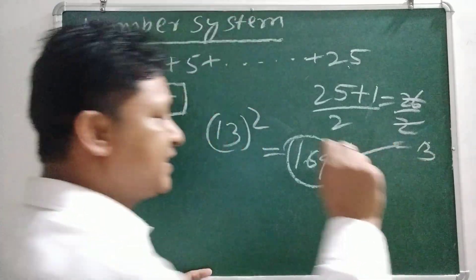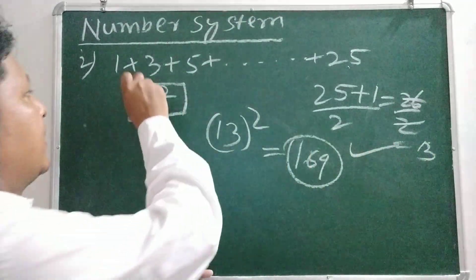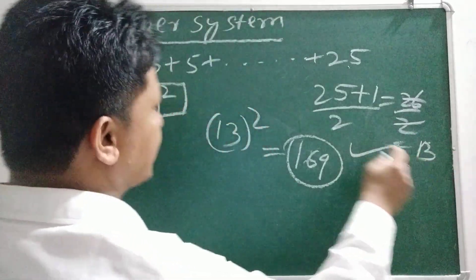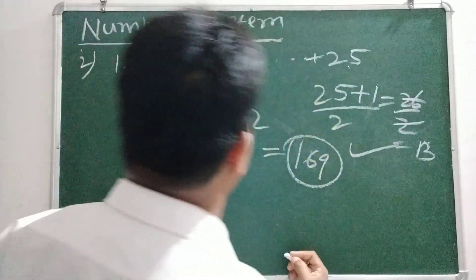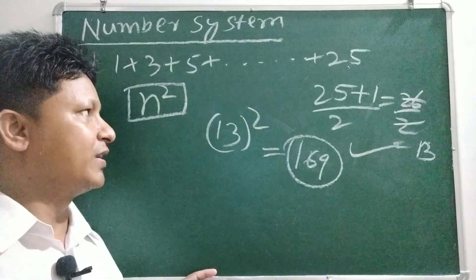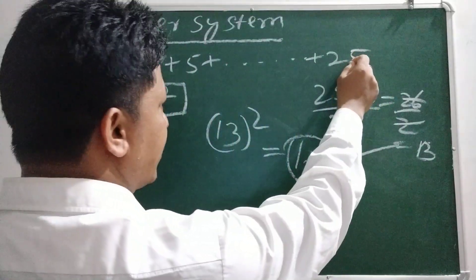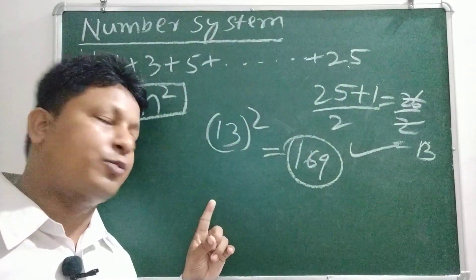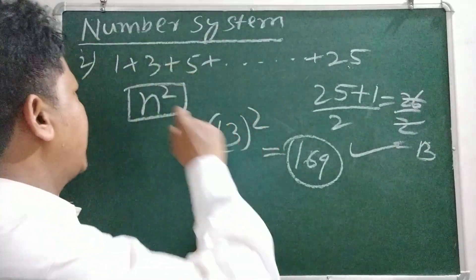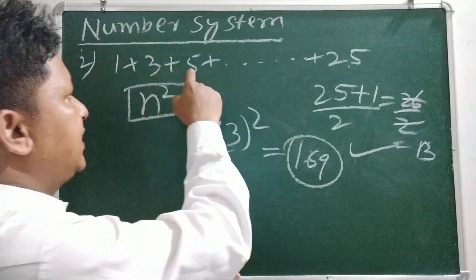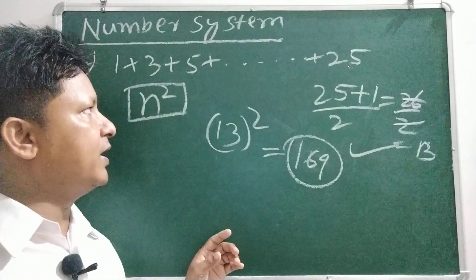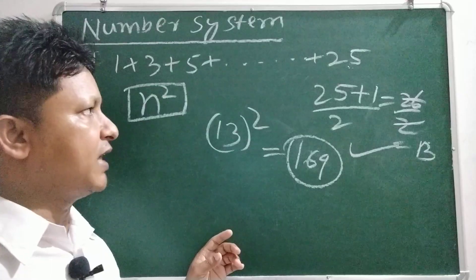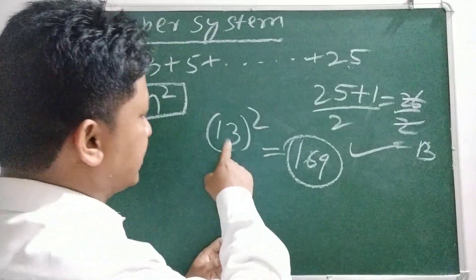13 squared is equal to 169. For odd numbers up to 25, the sum of squares gives us 169.